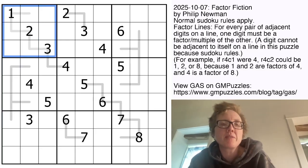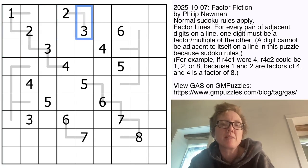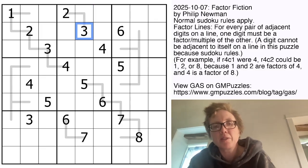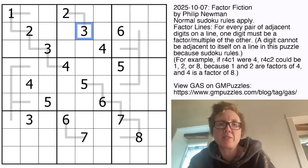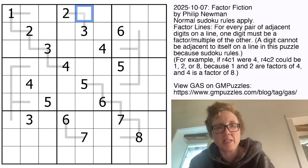We also have some gray lines in the grid that are factor lines, and a factor line indicates that two digits that are next to each other along the gray line, one of them has to be a factor or a multiple of the other. For example, 3 can only be next to one of its factors or one of its multiples, so its factor would be 1 in this case, or its multiples would be 6 or 9. And it can't be next to a 1 because there's a 1 in row 1 already, so this has got to be a 6 or a 9.